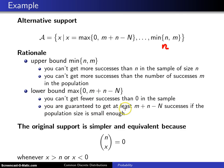But also, you are guaranteed to get at least m plus n minus capital N successes if the population size is small enough and, in addition, if the sample size is big enough.